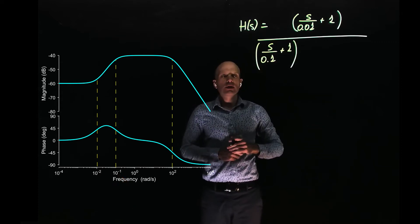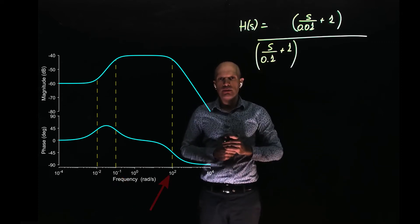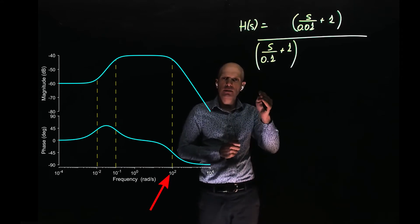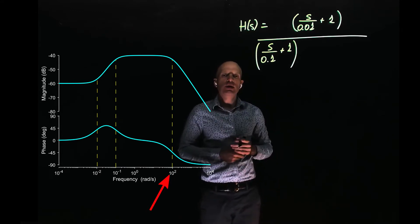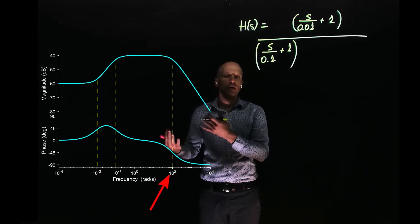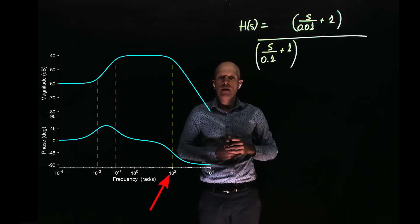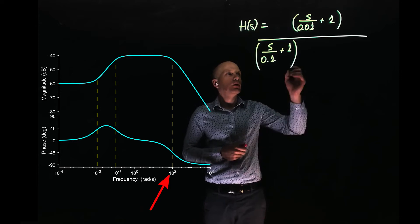If we now keep going up in frequencies, you see a change in the slope. The slope that was now flat becomes negative 20 decibels per decade, and this negative 20 decibels per decade added to the original slope of zero is coming from another pole.